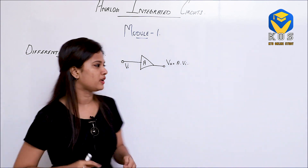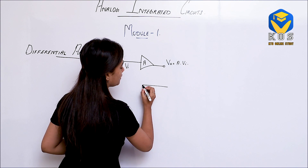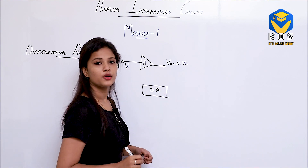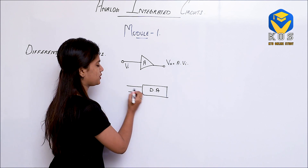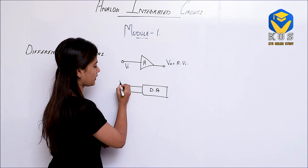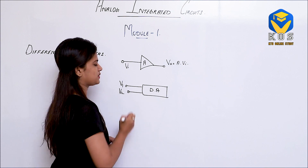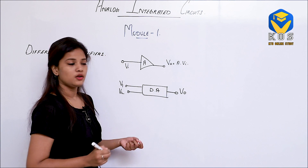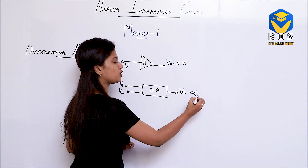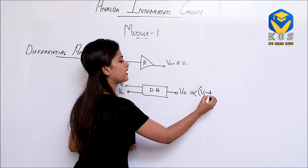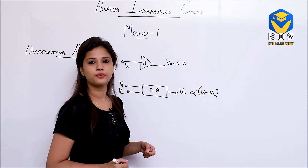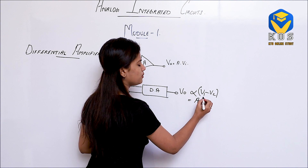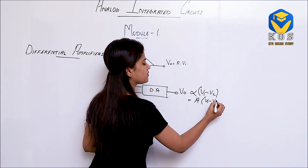If we consider a differential amplifier block with inputs V1 and V2 on the input side, the output V0 will actually be proportional to the difference between the input signals, V1 minus V2. With the corresponding gain, V0 equals gain into V1 minus V2.